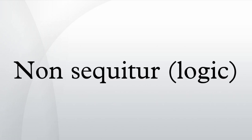Denying a conjunct: Denying a conjunct is a fallacy when in the following form — it is not the case that both A is true and B is true. B is not true. Therefore, A is true. The conclusion does not follow from the premises, as it could be the case that A and B are both false. An example: I cannot be both at home and in the city. I am not at home. Therefore, I am in the city. While the conclusion may be true, it does not follow from the premises. The declarant very well could neither be at home nor in the city, in which case the premises would be true but the conclusion false. This argument is still a fallacy even if the conclusion is true.